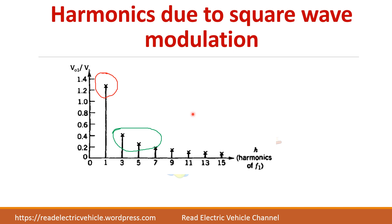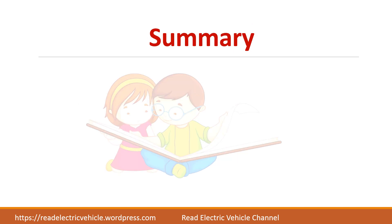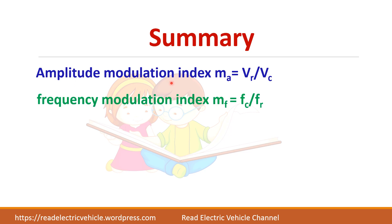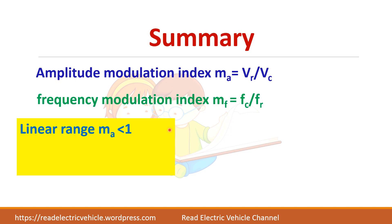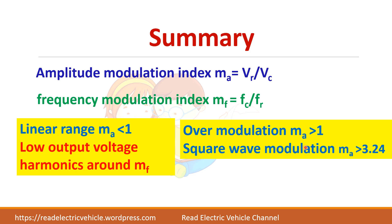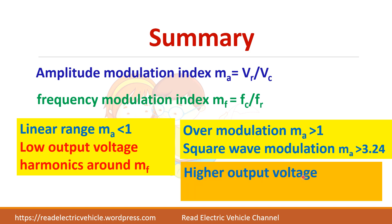In summary: in the linear range (ma ≤ 1), output voltage is lower but harmonics appear only around the switching frequency or mf, making filtering easy. In over-modulation and square wave modulation regions, higher output voltage is achieved but lower-order harmonics are introduced, which are difficult to eliminate.